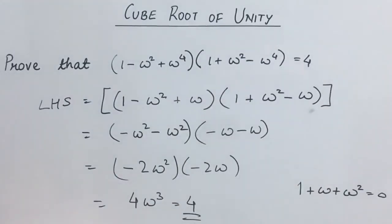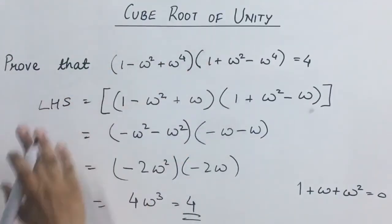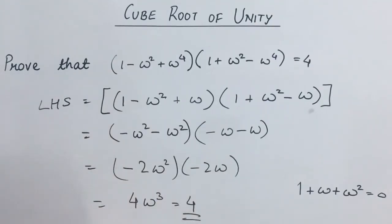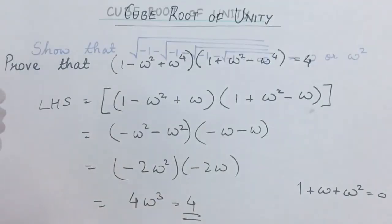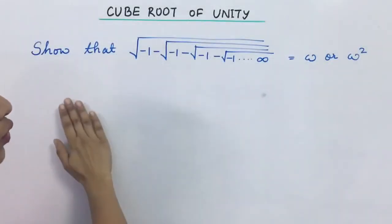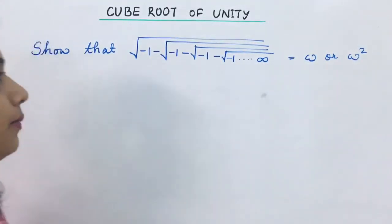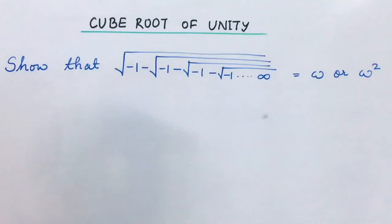So questions will be asked like this. Yaha par, directly you don't have to open the brackets. You just have to simplify them further and then easily you can solve them. Next question. Show that this value is equal to omega or omega square. These type of questions are very frequently asked in competitive exams.